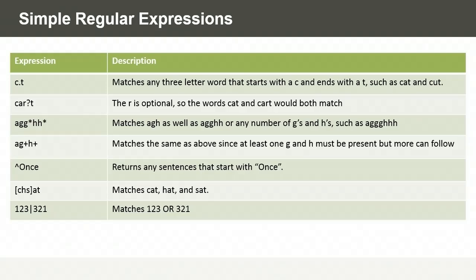In our next example, we have square brackets containing the letters c, h, and s. So we're matching any one of those with what follows outside of the square brackets, which is a-t. That would match words like 'cat', 'hat', and 'sat'. Finally, in our last example, we have 1-2-3 vertical pipe 3-2-1. The vertical pipe symbol is the OR symbol, so here we're matching either 1-2-3 or 3-2-1.